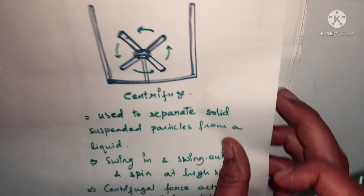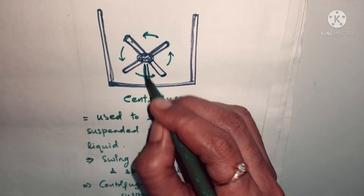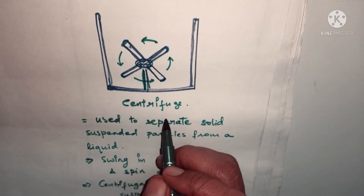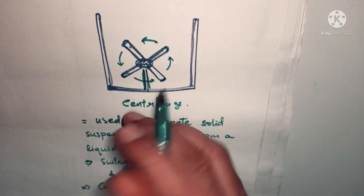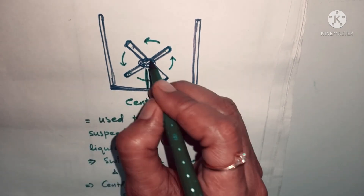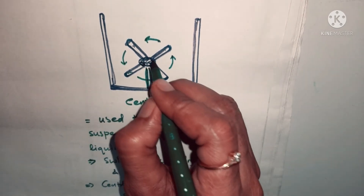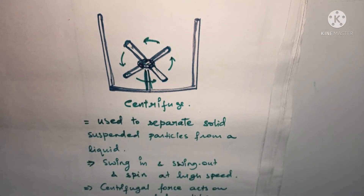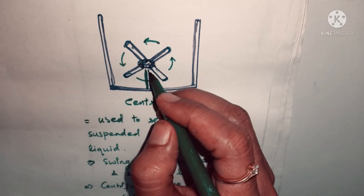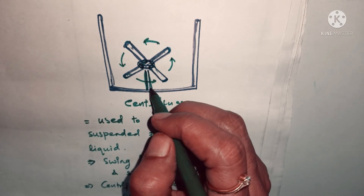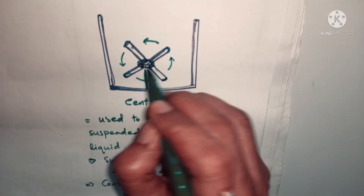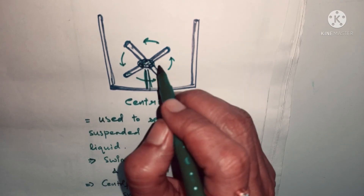Let us understand this with a diagram. There is one machine known as a centrifuge where centrifugation occurs. In this machine, four test tubes are taken at a time and fixed on the centrifugal machine. Milk containing cream or fat is filled into each tube. Once you start spinning — once the whirling starts — this machine rotates at very high speed.